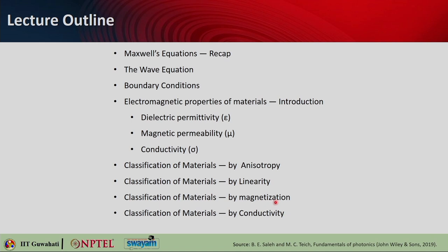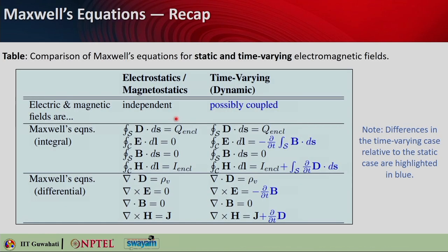In the last lecture we saw that Maxwell's equations can be written in integral form and differential form. In electrostatics or magnetostatics the electric and magnetic fields are independent of each other, but in the dynamic or time-varying case these fields get coupled to each other. The first law is Gauss's law, which tells us that the electric flux through any closed surface is equal to the charge enclosed by that surface, describing the relationship between electric charge and the electric field it produces — pictured as field lines originating from positive charges and terminating on negative charges.